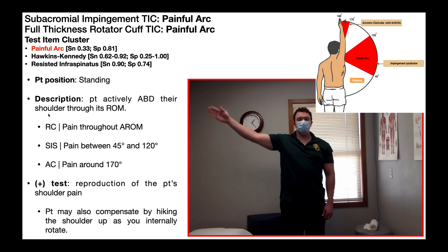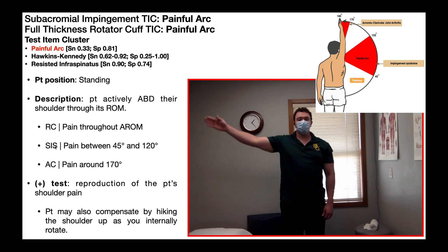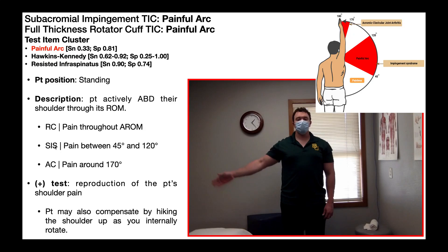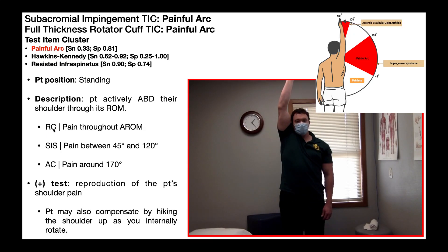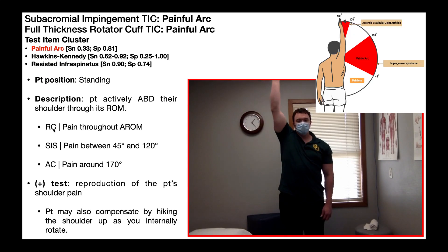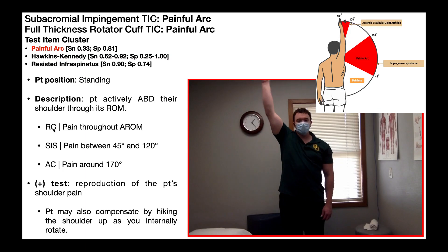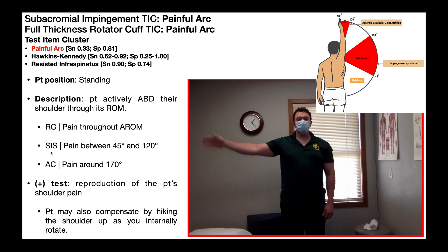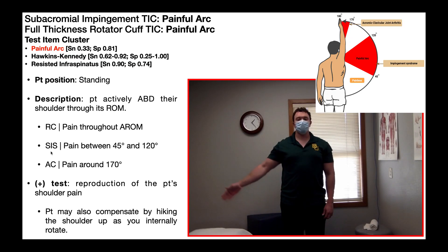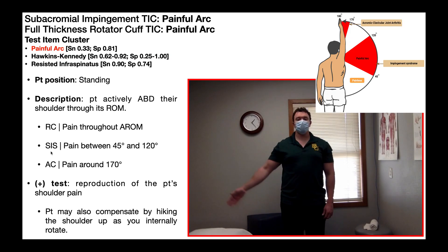Another important utility of the painful arc test is differentiating between a rotator cuff tear and subacromial impingement syndrome. If somebody has a true rotator cuff tear, pain would occur throughout the entire active range of motion of abduction — not just between 45 and 120 degrees, but also from 0 to 45 degrees. If somebody has true impingement syndrome, they probably will not have pain between 0 and 45 degrees; the pain will begin at around 45 degrees and continue upward. So it's really that first 30–45 degrees of abduction that helps you differentiate between a rotator cuff tear and impingement syndrome.